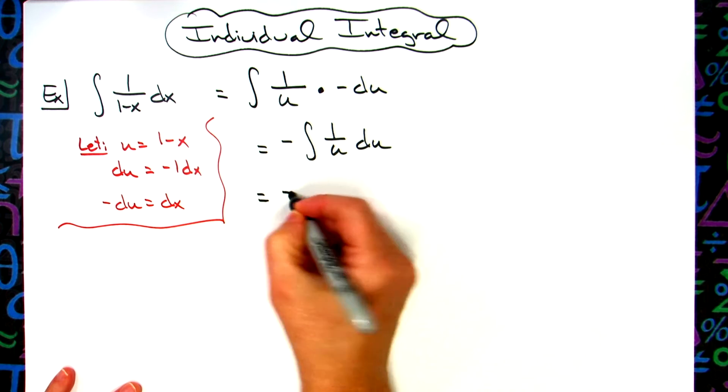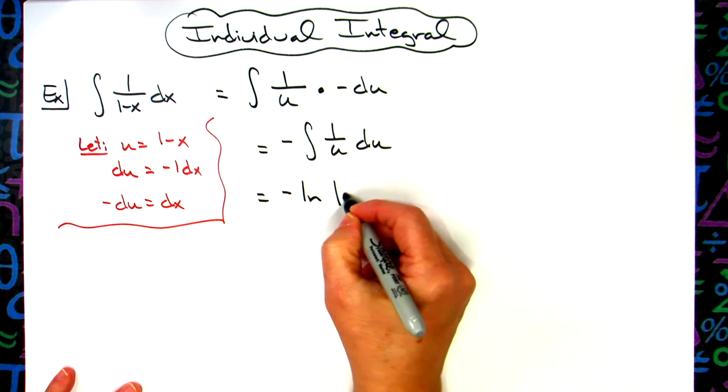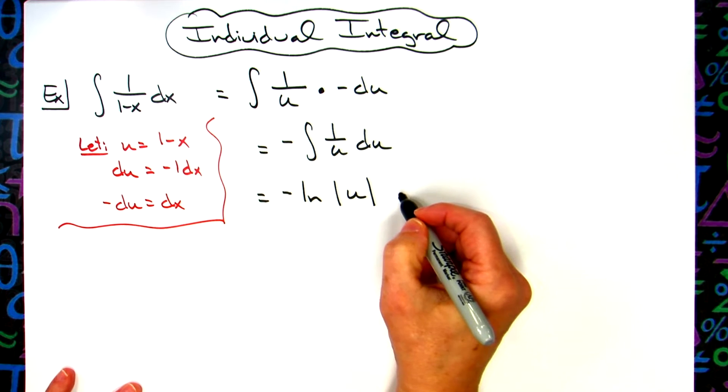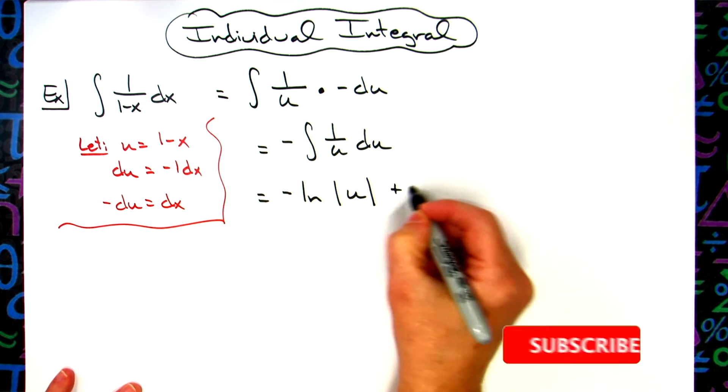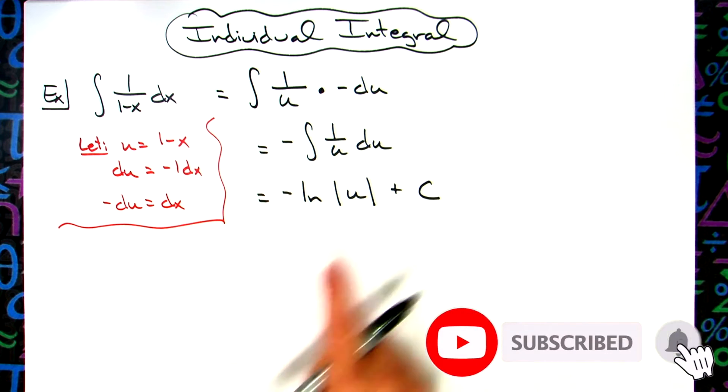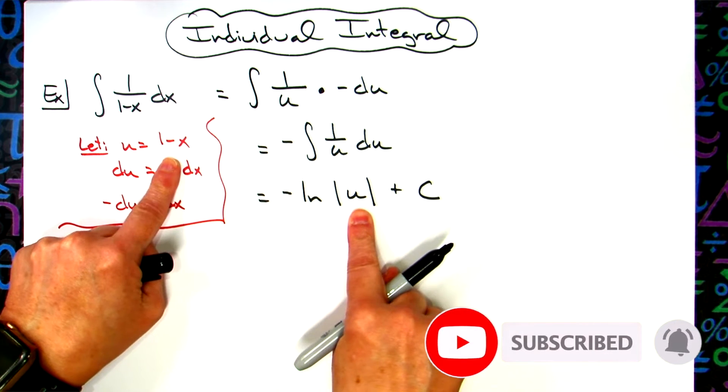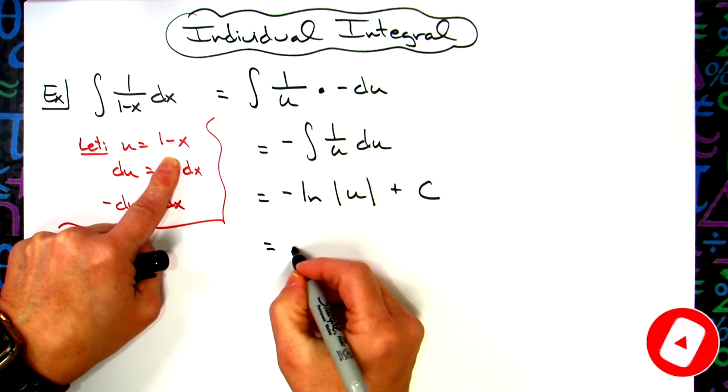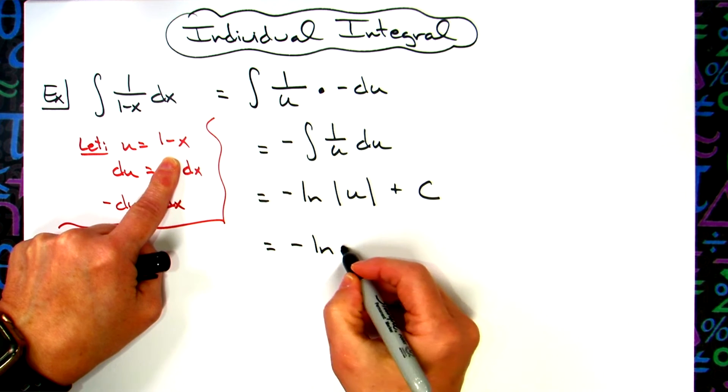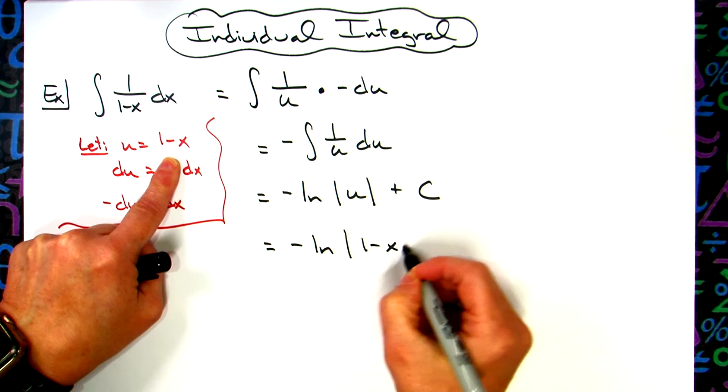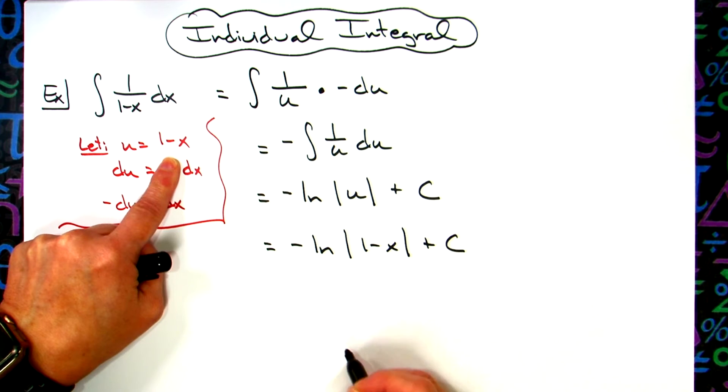So we'll have the negative that is in front, natural log absolute value of our u. There's the integration via the formula and then we can go plus c. Last step then would just be to replace that u with what it equals. So then we'll have negative natural log absolute value 1 minus x and then plus c.